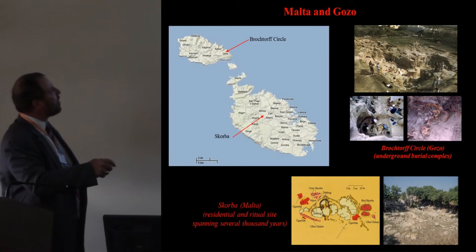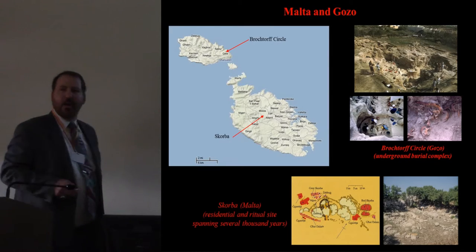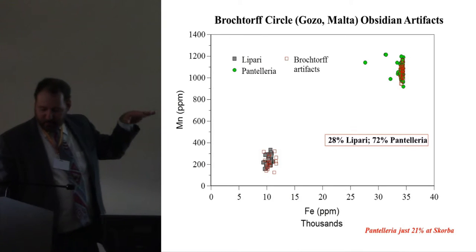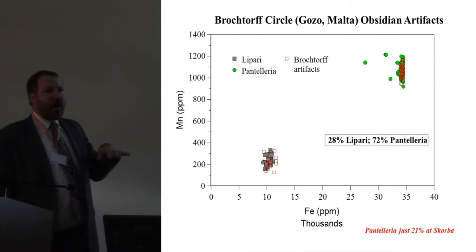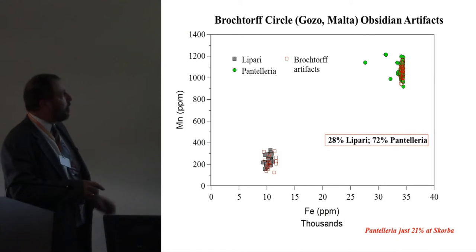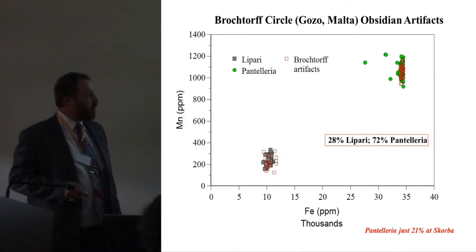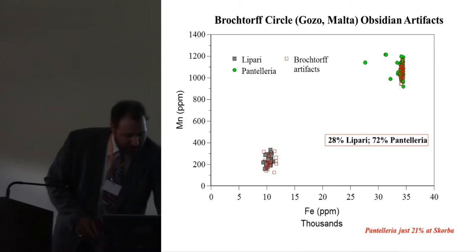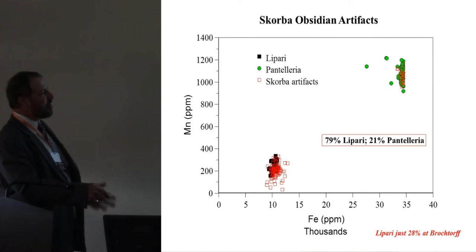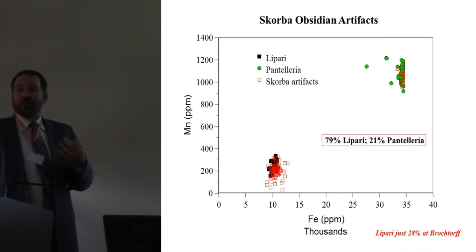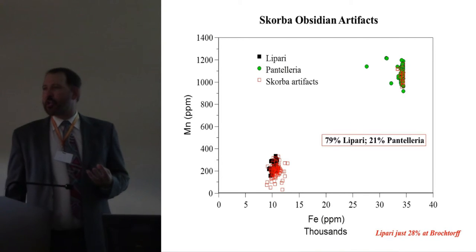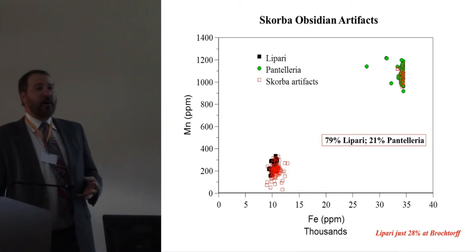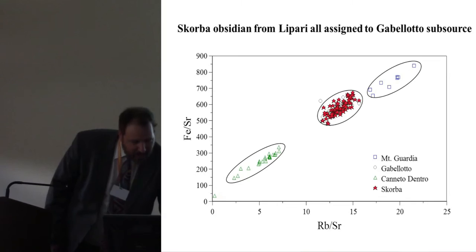Looking at the Brochtorff Circle on Gozo versus the excavated site of Skorba on the main island of Malta, there's a very big difference. Brochtorff Circle is a burial complex, whereas Skorba is a mixture of residential and other uses. On Gozo, most of the obsidian — 70-odd percent — is coming from Pantelleria, and 28% from Lipari. But on Skorba it's the entire opposite: 79% coming from Lipari. These two islands are very close, so this is a great example of intentional selection of two different kinds of obsidian for some purpose. We're planning to do usewear analysis to see whether this ties in.